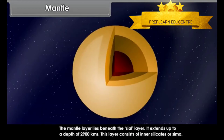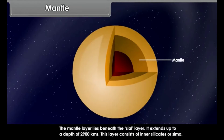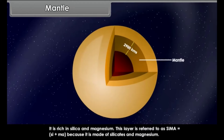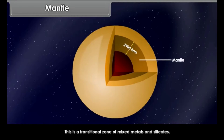Mantle. The mantle layer lies beneath the SIAL layer and extends up to a depth of 2,900 kilometers. This layer consists of silicates and is referred to as SIMA — SI plus MA — because it is made of silicates and magnesium. This is a transitional zone of mixed metals and silicates.